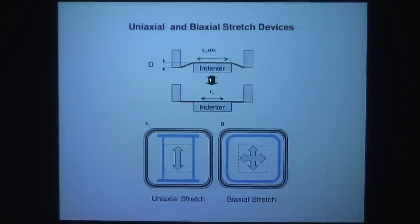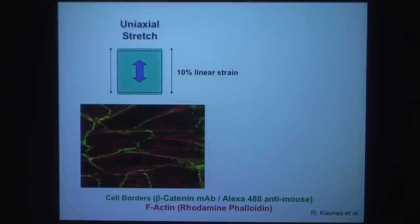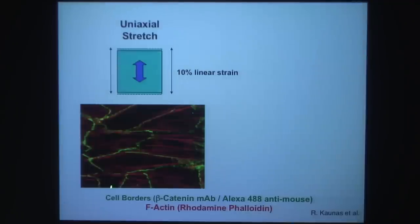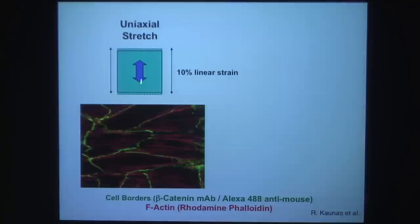By moving the indenter up and down cyclically — when it's down the cells are relaxed, when it's up they are stretched — by configuring the device we can induce either uniaxial stretch in one direction or biaxial stretch in multiple directions. These two kinds of stretch induce different responses. For example, looking at actin stress fiber alignment and cell orientation stained with rhodamine phalloidin, with cadherin monoclonal antibody marking cell borders, the cells and stress fibers align perpendicular to the direction of uniaxial stretch.